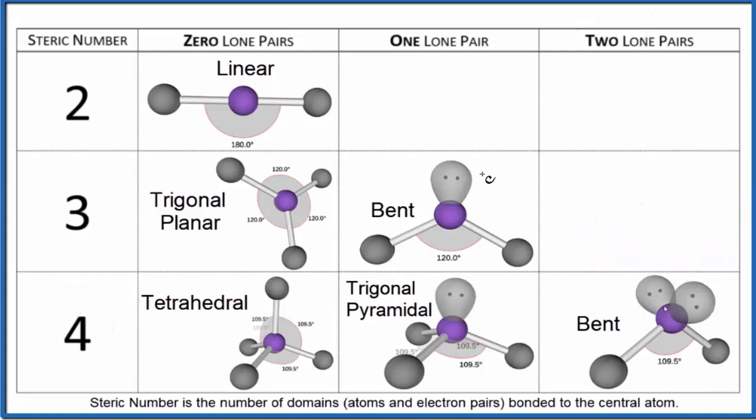Finally, if you're using the AXE notation, here we'd have A, that's the central atom. We'd have two atoms attached. E is the number of lone pairs. So we'd have AX2E, and you could look that up. That would be a bent molecular geometry.